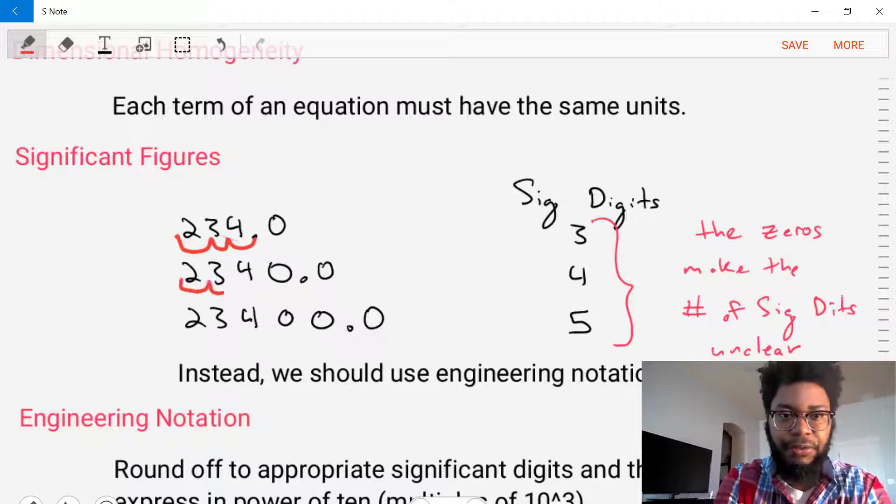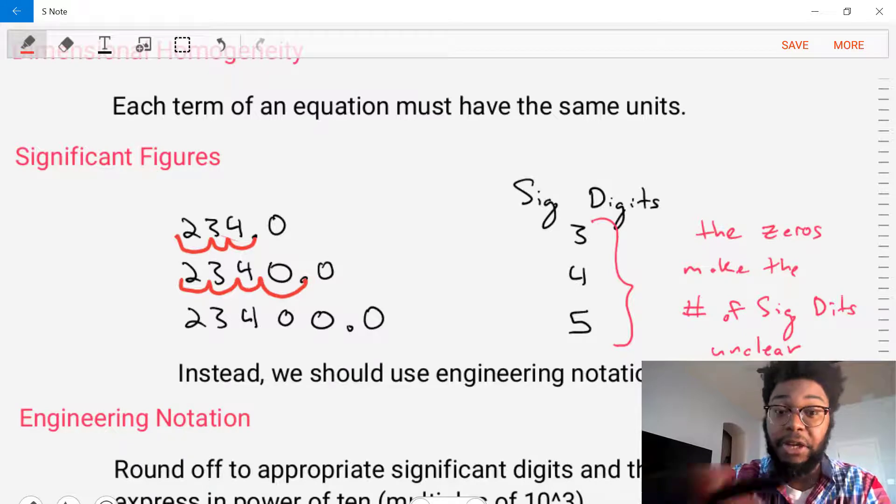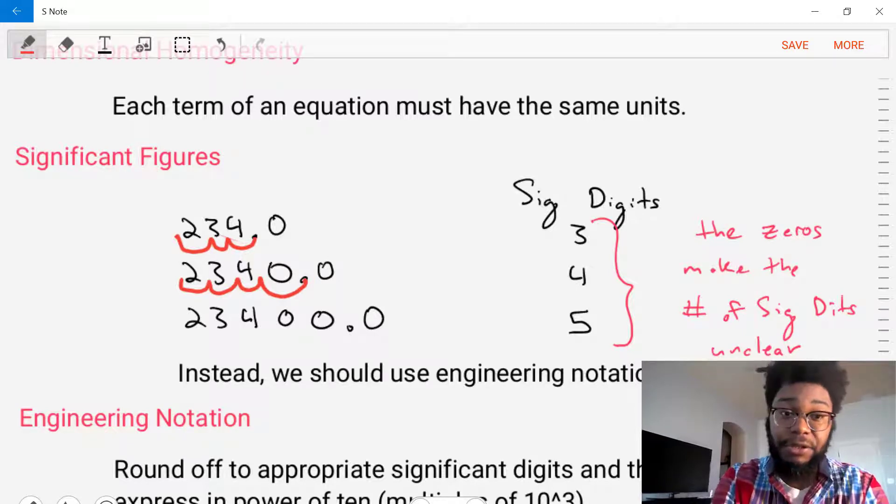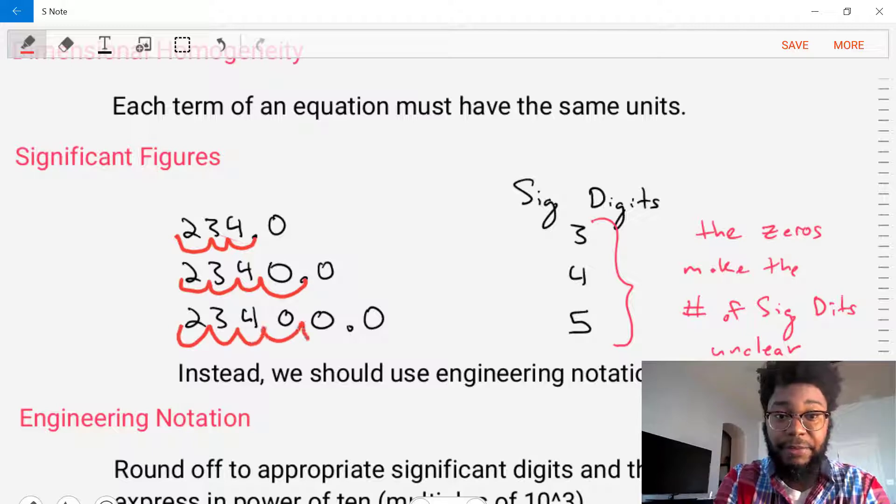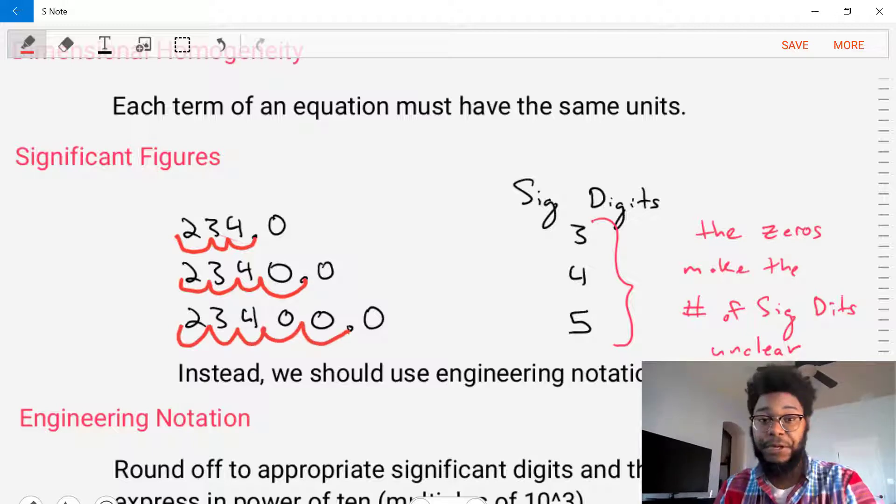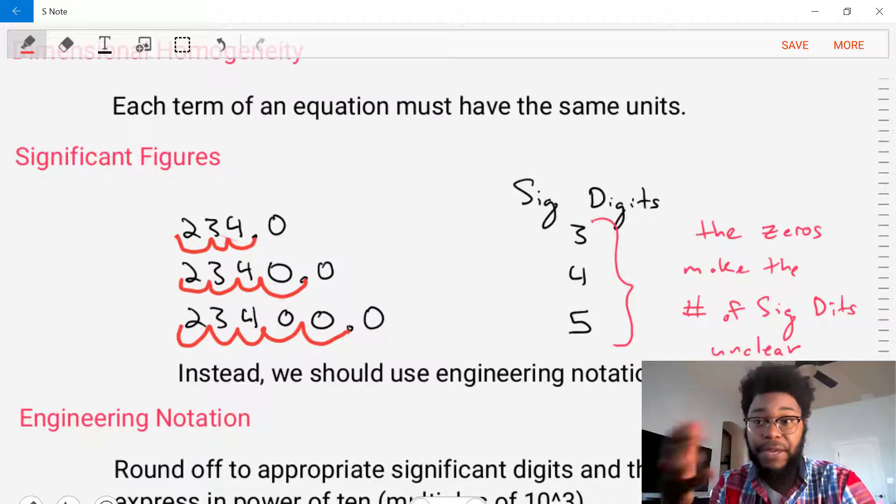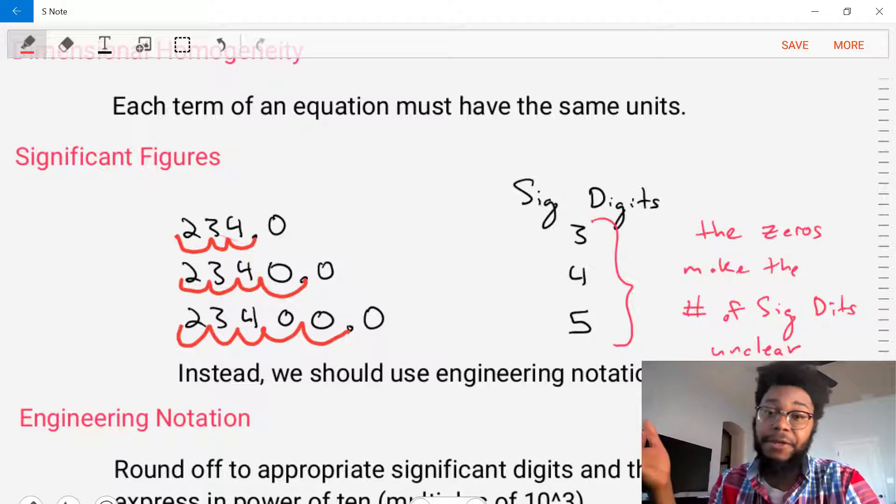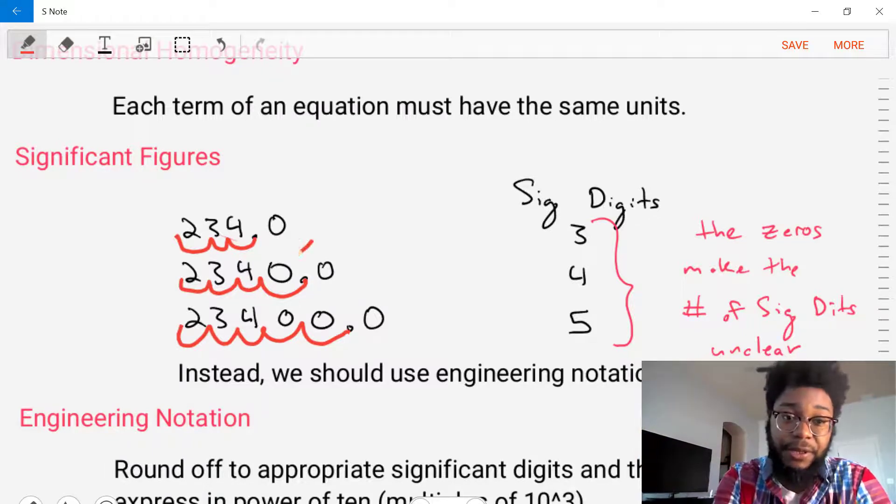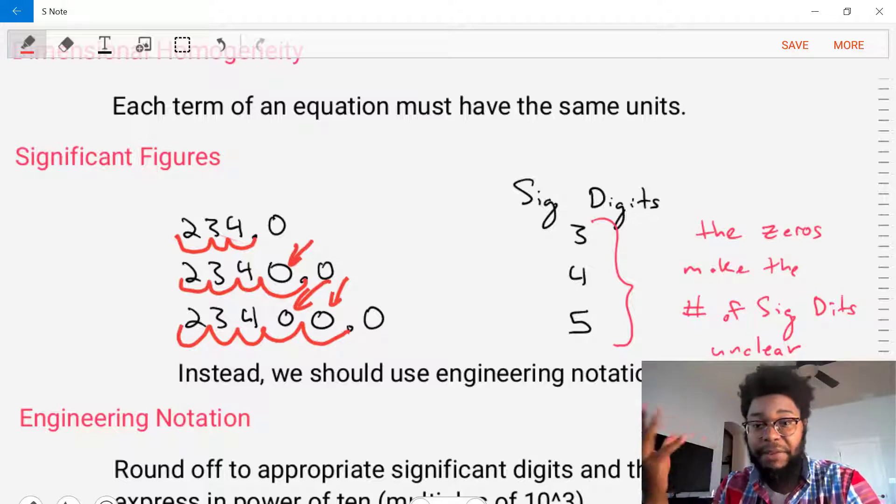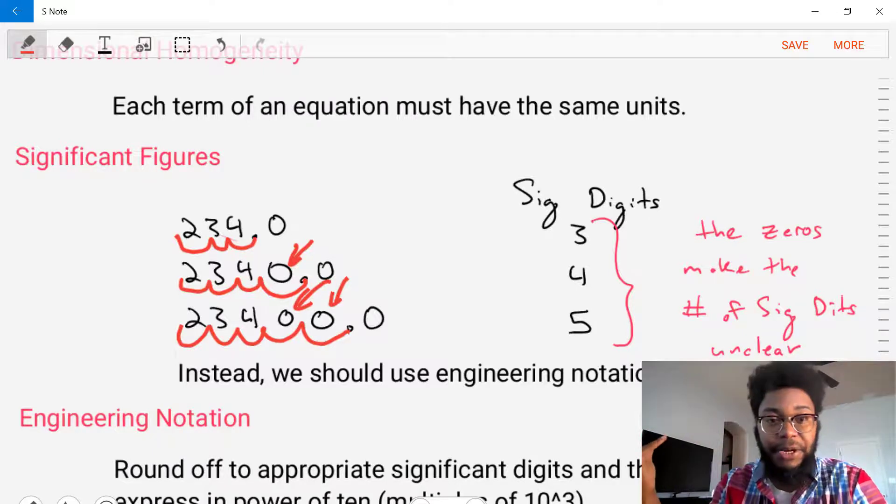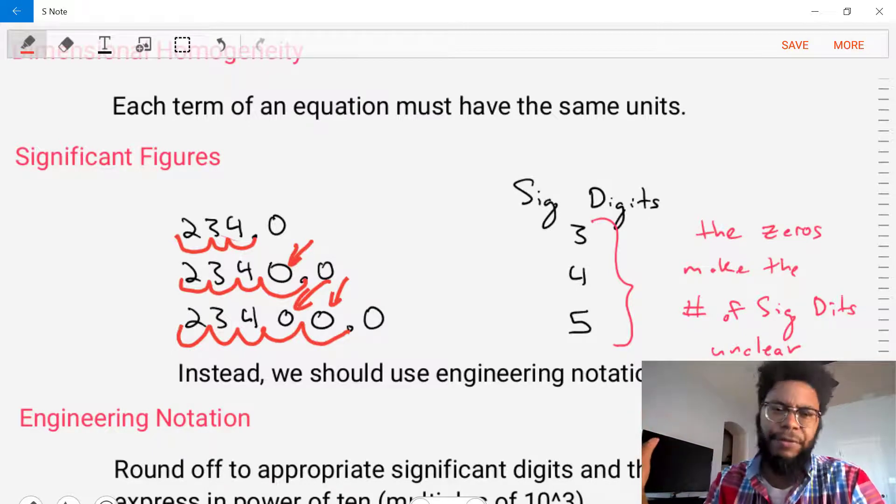If we were to look at those numbers and try to say, what are the significant digits or significant figures for these numbers, we could count them out. And we'd find that anything that's a real number, anything that comes before the dot is a real number. It's a significant digit. And we can just count and see that these three numbers, the first one has three significant digits, the next one has four, the next one has five. And when we look closely, we see that the zeros, these zeros ahead of the decimal point, make the number of significant digits maybe a bit unclear because is zero really significant?